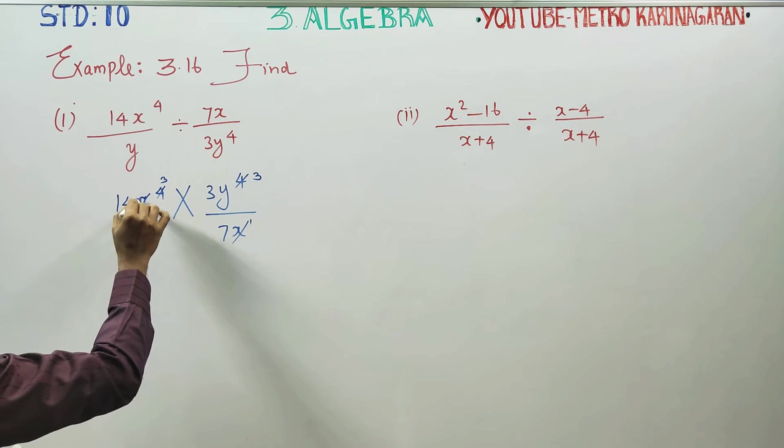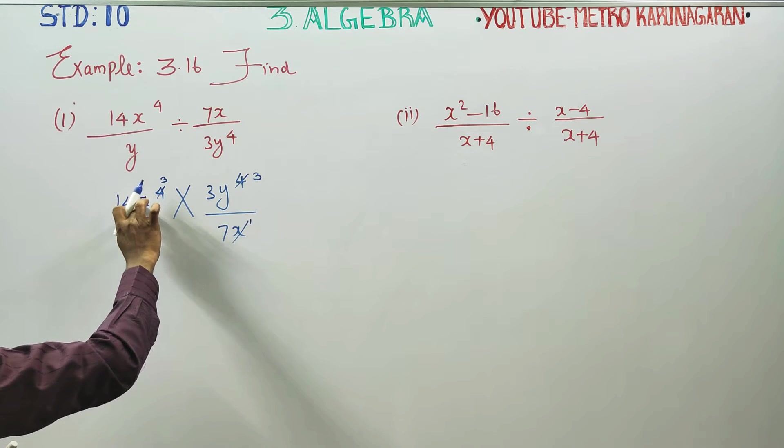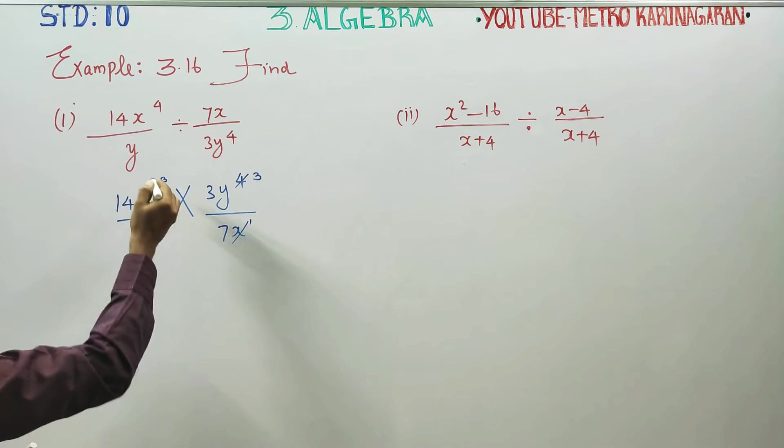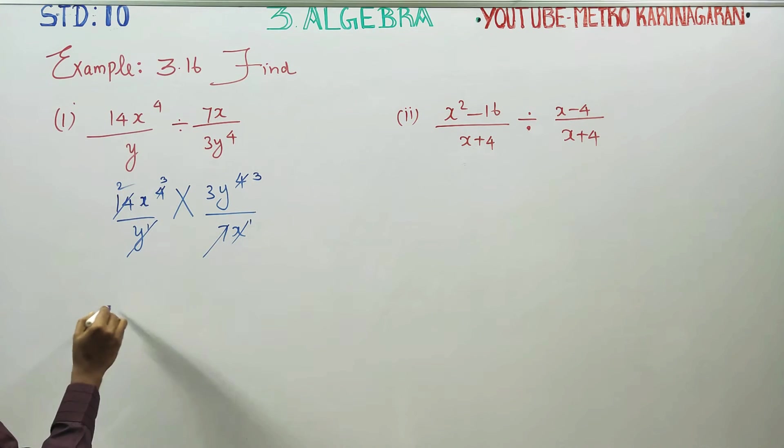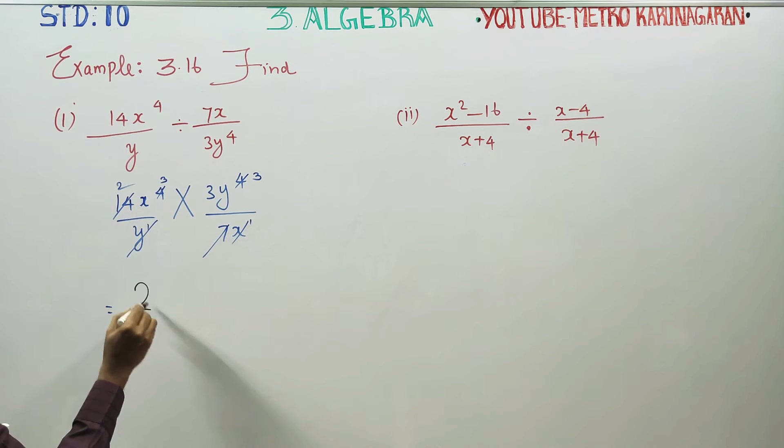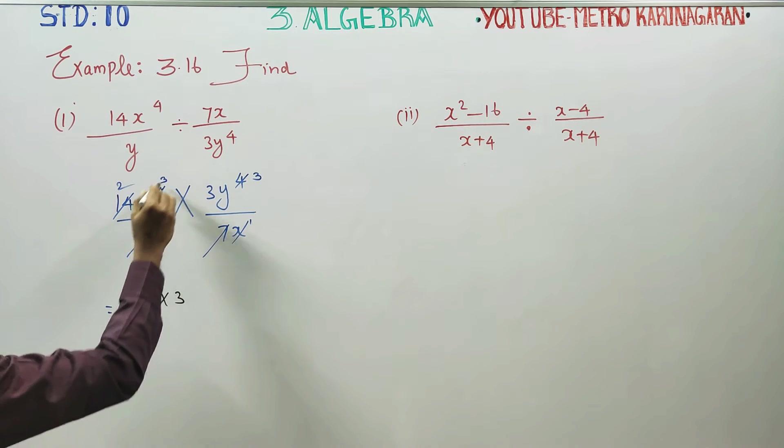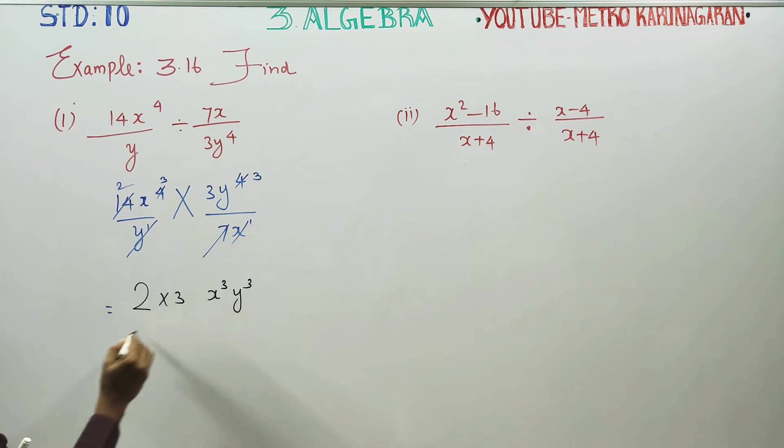x cancel - power 4 minus 1 is 3. Seven cancels to 2 times. Balance. Denominator is nothing. Numerator: 1 is 2, and 3 is 3. x power 3. y power 3.